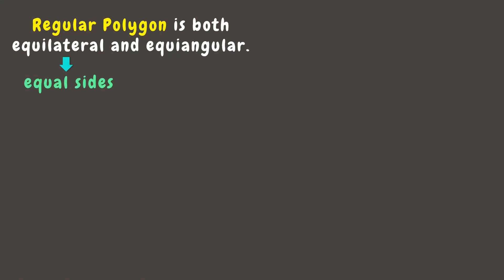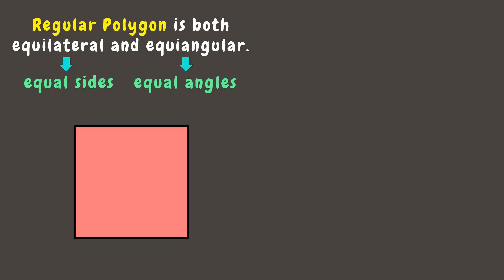Equilateral means equal sides, while equiangular means equal angles. For example, a square has four equal sides. The tick marks on the line segments show that they are congruent or equal. It means that when one side is four centimeters, the other sides are also four centimeters long.